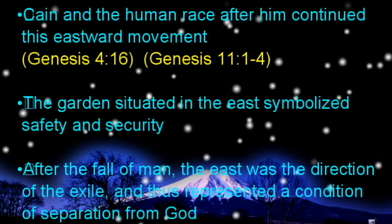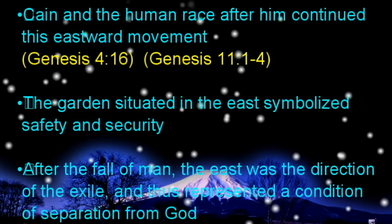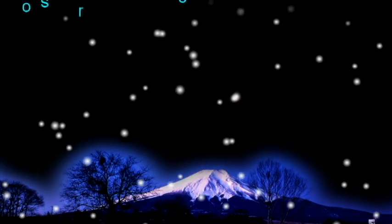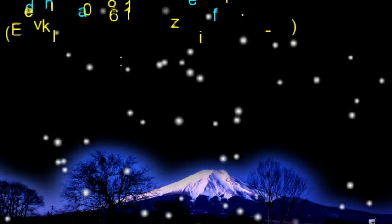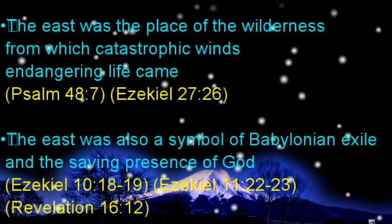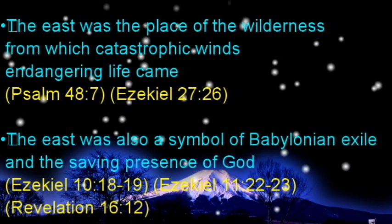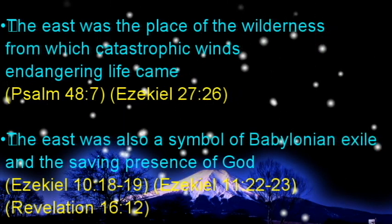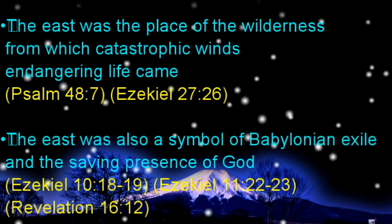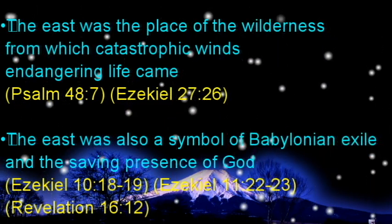The garden situated in the east symbolized safety and security. After the fall of man, the east was the direction of the exile, and thus represented a condition of separation from God. The east was the place of the wilderness, from which catastrophic winds endangering life came. Read Psalm 48 verse 7 and Ezekiel 27 verse 26.